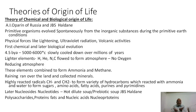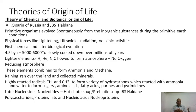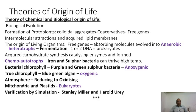J.B.S. Haldane described this ocean environment as a 'hot dilute soup.' In this hot dilute soup, all the chemicals were formed: simple sugars, amino acids, fatty acids, purines, pyrimidines. Later, more complex molecules formed through reactions: nucleosides and nucleotides appeared. Then sugars combined to form polysaccharides, amino acids joined to form proteins, fatty acids became fats, and nucleotides combined to form nucleic acids and nucleoproteins — all the biochemicals of life. This completed the chemical origin stage.